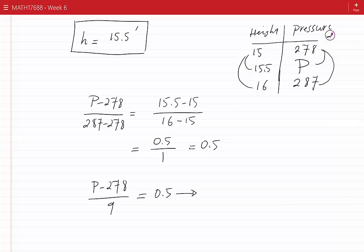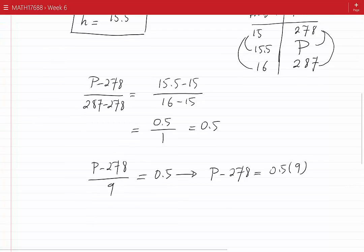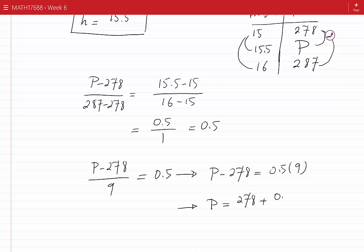By cross-multiplication, P minus 278 equals 0.5 times 9. Taking 278 plus 0.5 times 9, which simplifies to 282.5 Pascals.